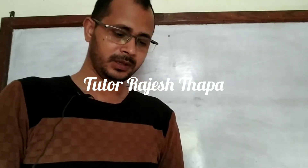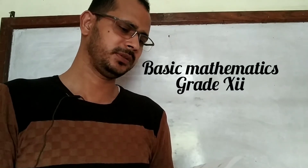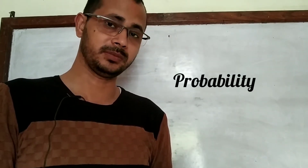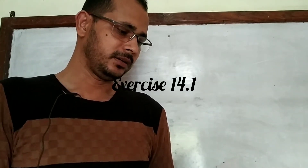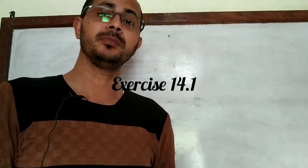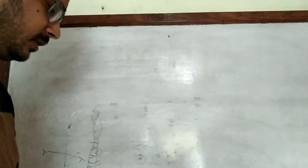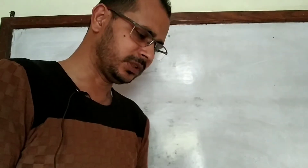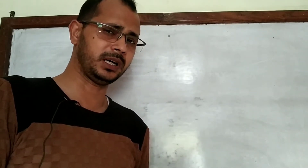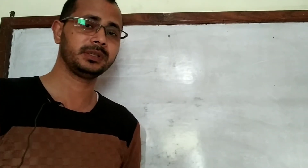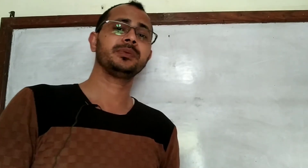Hello everyone, welcome to this video. Today I will be discussing problems of probability for students of the science stream — that is Exercise 14.1 of Basic Mathematics. The basic formula to calculate the probability of any event is: number of favorable outcomes divided by number of possible outcomes. On the basis of this formula we will be able to solve almost all the problems of Exercise 14.1.